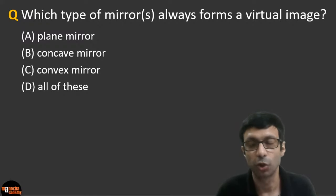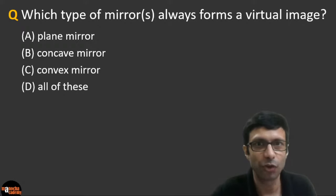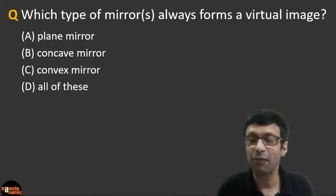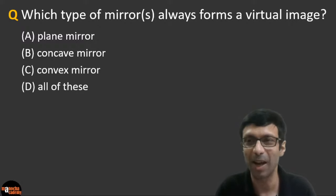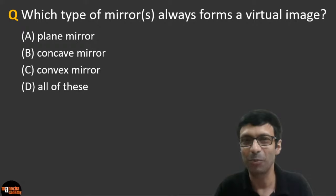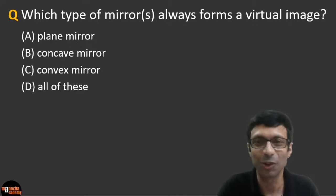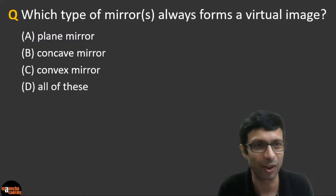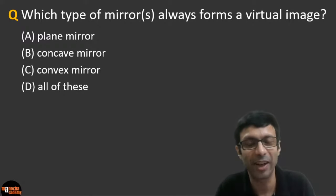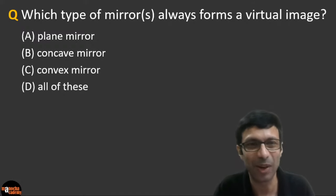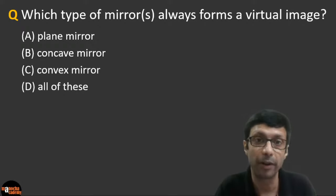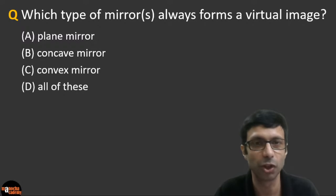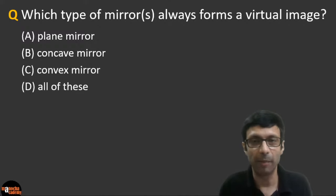Which type of mirror or mirrors always forms a virtual image — there can be multiple answers. You know that a plane mirror always forms a virtual image. Have you ever seen yourself upside down in a plane mirror? Virtual images are always upright. So a plane mirror always forms a virtual and upright image.